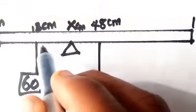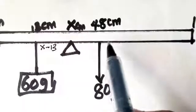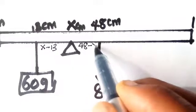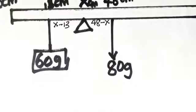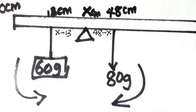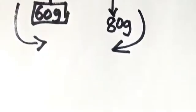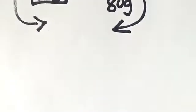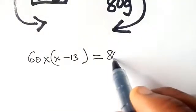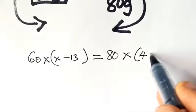From here to here, I don't know what that is. I will call it x minus 13. From here to here, I don't know what the distance is. I am going to call it 48 minus x. Applying the same law that we did before, this direction is equal to this direction. Applying moment of forces, clockwise moment is equal to anti-clockwise moment.